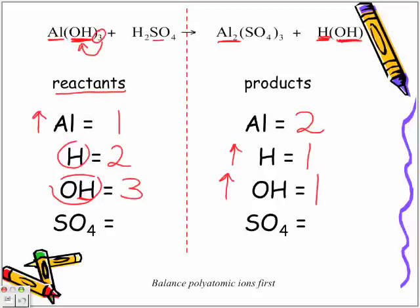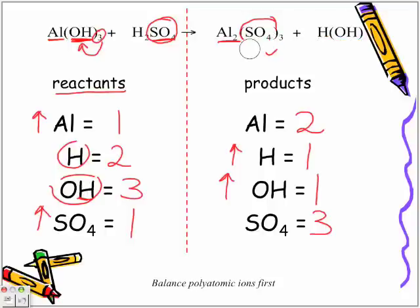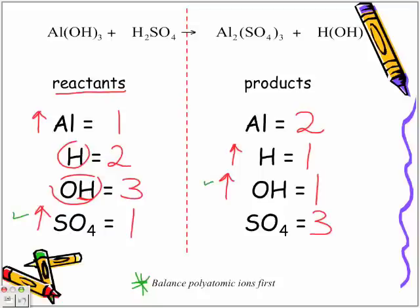Looking at the sulfate, we have one sulfate molecule — this whole thing is one molecule of sulfate. Over on the product side, the sulfate is contained within brackets, but this three outside the brackets means I have three total molecules of sulfate, which means we need to increase the side that is lower. So let me erase some of this because this is now where we're going to need to start balancing. We're going to balance polyatomics first, so we're either going to balance this polyatomic or this polyatomic.